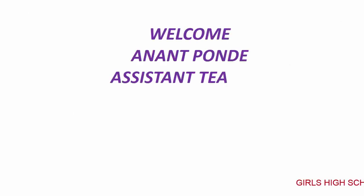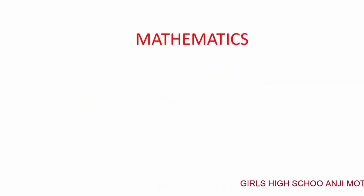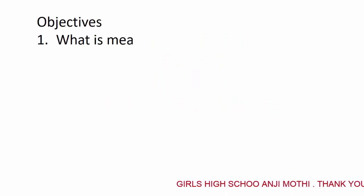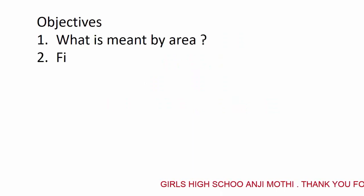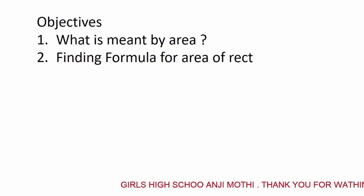Welcome to my e-learning educational video tutorial. I am Ananta Ponde, assistant teacher at Girls High School, Anjimo. Today we will discuss mathematics, Class 5, Chapter 12: Perimeter and Area. Our objectives are: what is meant by area, finding the formula for area of a rectangle, finding the formula for area of a square, and solving examples on area.